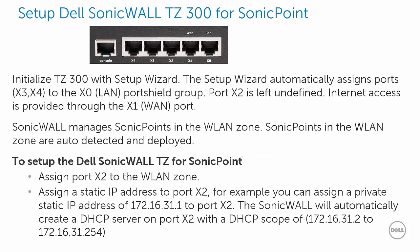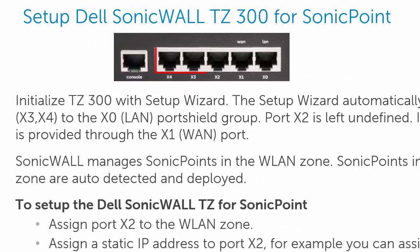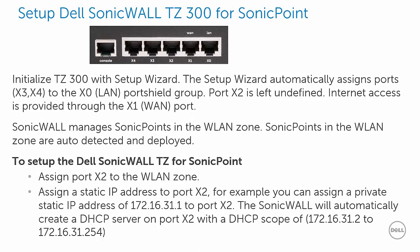Now we will be discussing setting up a TZ series product with a SonicPoint. In the rest of this demo, we will be using a TZ300, but the process is the same for all TZ series products. The TZ300 has been initialized by the setup wizard, which automatically assigns ports X3 and X4 to the X0 LAN port shield group. The X1 WAN port is usually connected to a cable or DSL modem for internet access, and the X2 port is left undefined. In order for the SonicWall to manage SonicPoints, the SonicPoint must be in the WLAN zone to be detected and deployed. For this scenario, we will assign port X2 to the WLAN zone and assign it a static IP address.